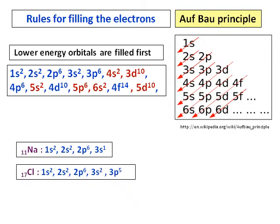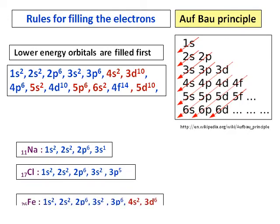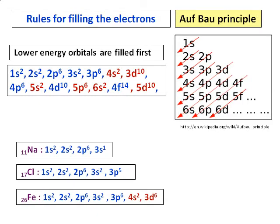The electronic configuration of chlorine is 1s2, 2s2, 2p6, 3s2, and 3p5. Notice that the 4s level is filled before 3d because, according to the Aufbau principle, lower energy orbitals must be filled first.